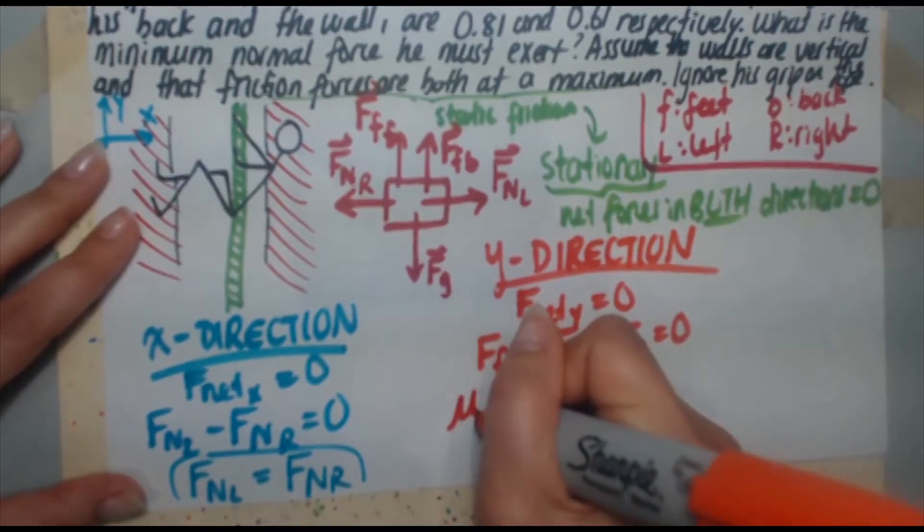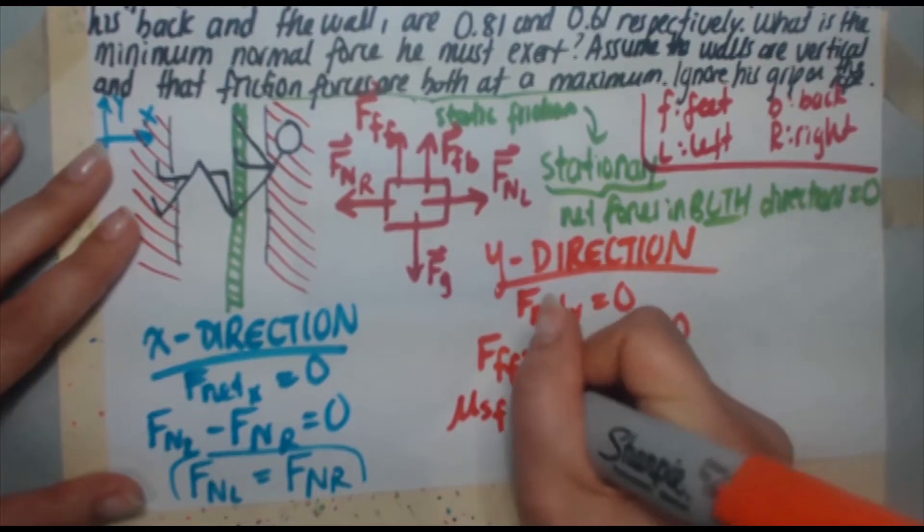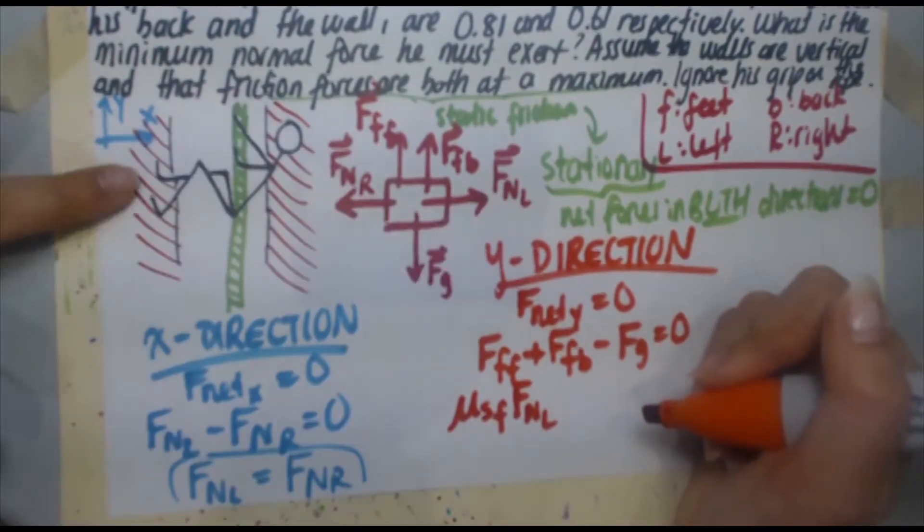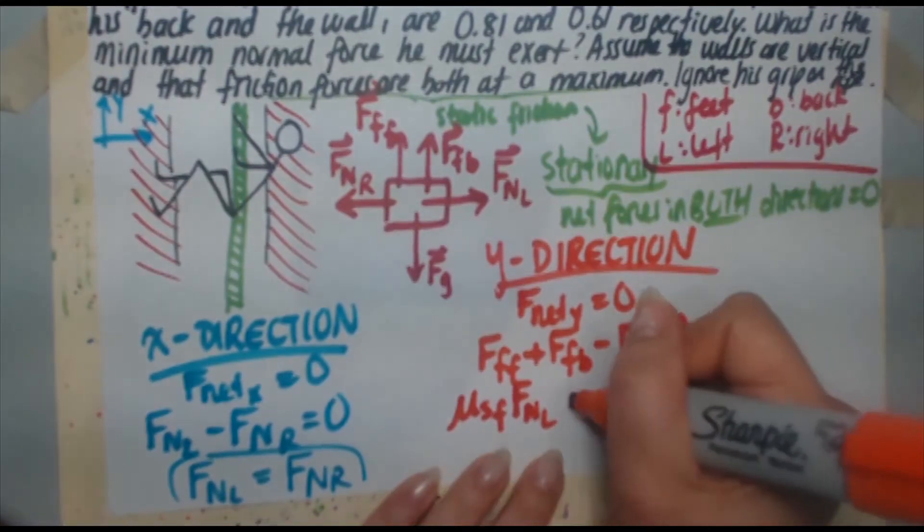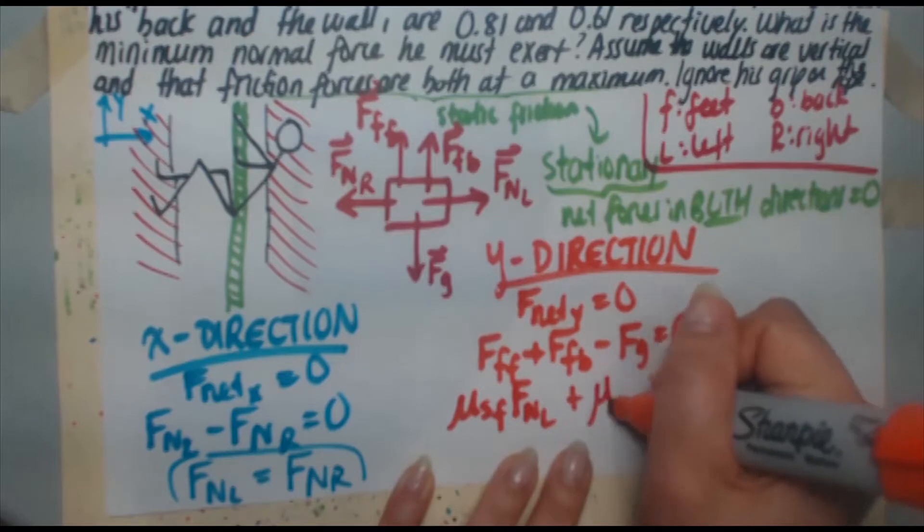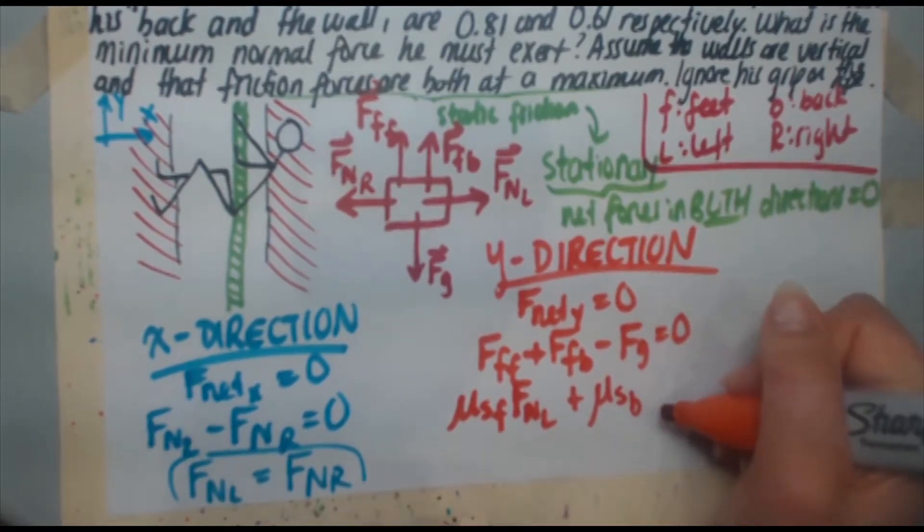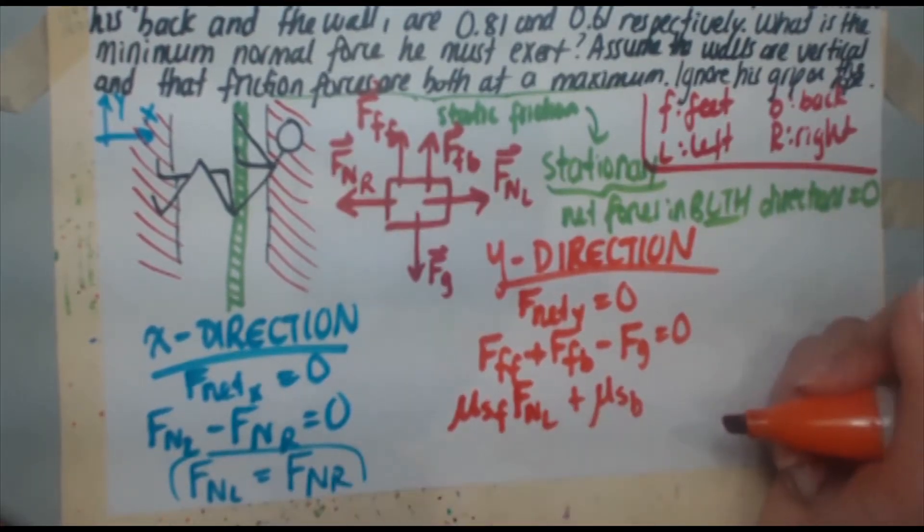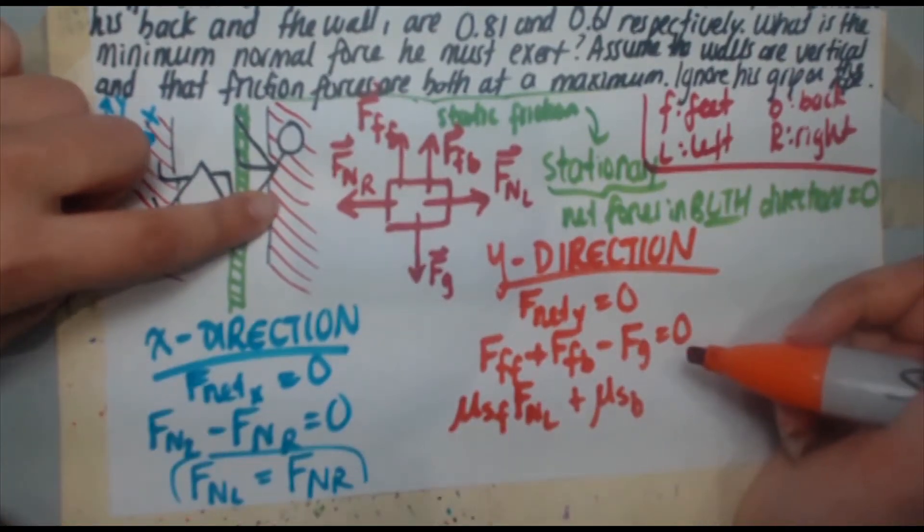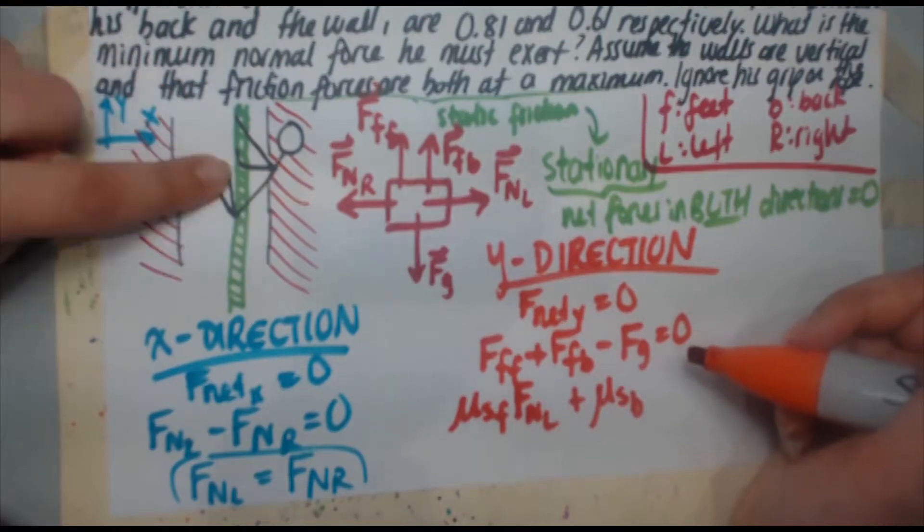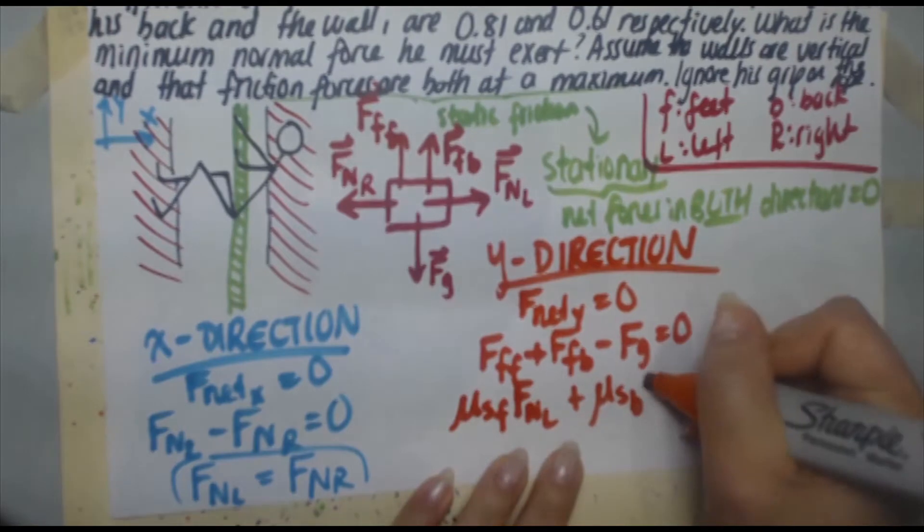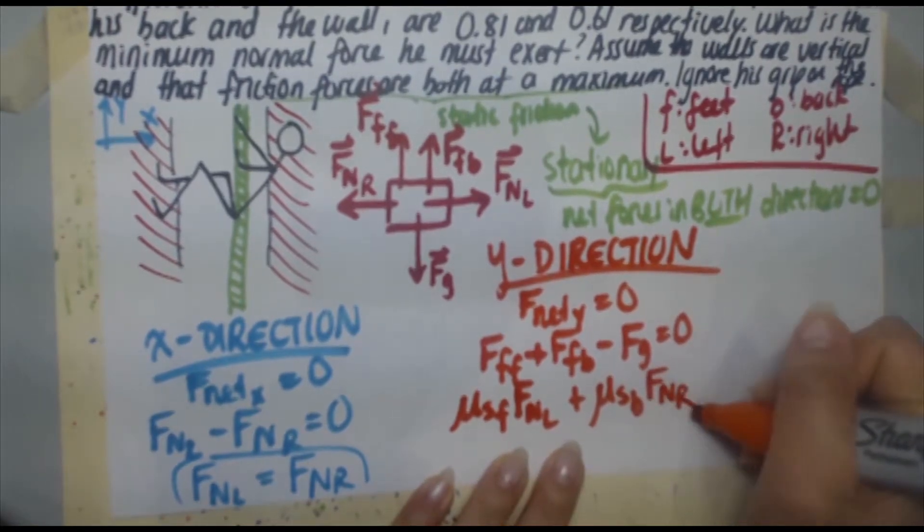And so the normal force exerted back on the feet is the normal force going in the other direction. But we've got the normal force going left, that's FNL. That's the normal force acting on the feet. So we've got mu s on the feet, force normal left. That's this force. The normal force is going like that for the feet.